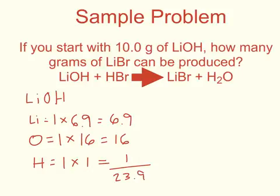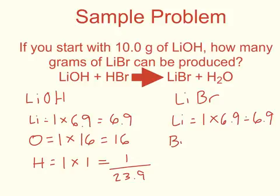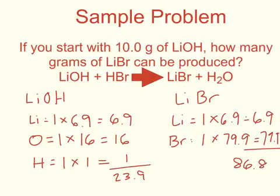I'm going to go through the same steps to calculate the molar mass of lithium bromide. In lithium bromide, there's 1 lithium. 1 times 6.9 is 6.9. There's also 1 bromine. 1 times the atomic mass of bromine, which is 79.9, is just 79.9. When I add those two numbers, I get a mass of 86.8 grams. I'm going to use these two numbers to solve my problem.